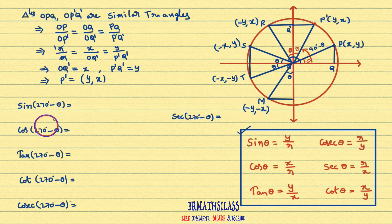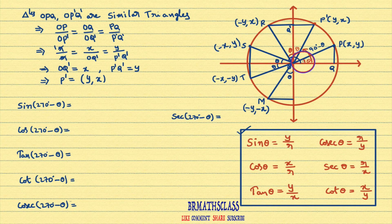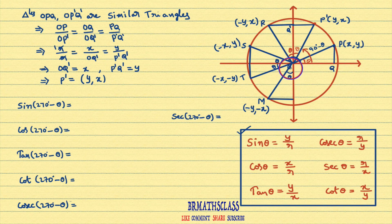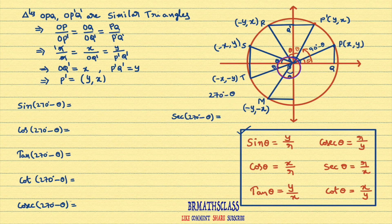Now you see here. We got the coordinates of M. What is the angle made by OM with the x-axis? Please observe. This full angle is 270 degrees. Same angle theta is taken here. So this full angle is 270 degrees. If I remove this theta, OM makes an angle of 270 degrees minus theta with the x-axis. I hope you understand this.